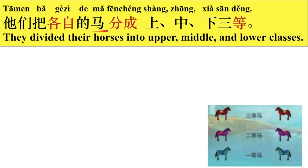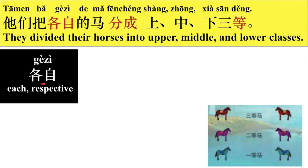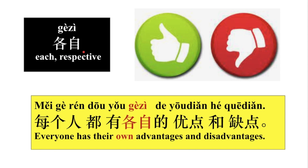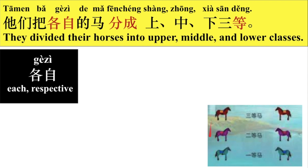他们把各自的马分成上、中、下三等。好，我们来看一下各自。例子：每个人都有各自的优点和缺点。他们把各自的马，好，我们看这个就是马。他们把各自的马分成上、中、下三等。